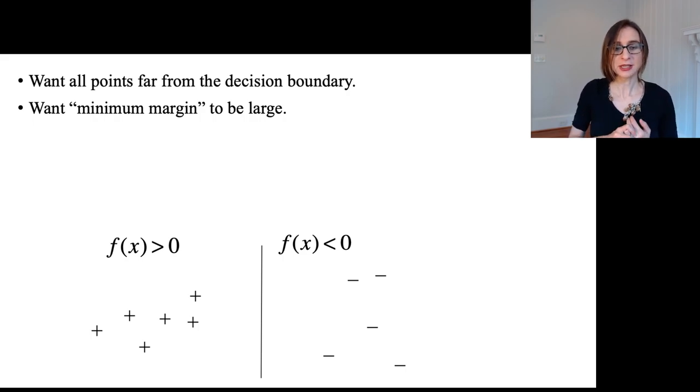Another way of seeing that is that we want the minimum margin to be large. We want the minimum distance between the decision boundary and the training points to be large.